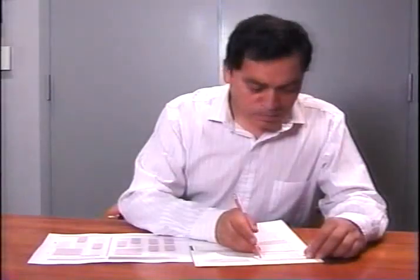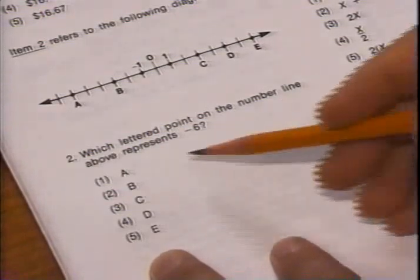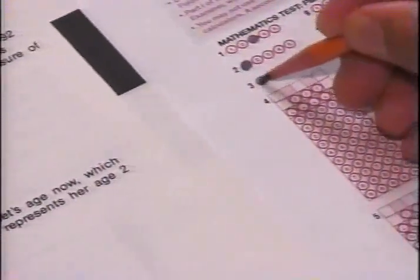As you take your GED mathematics test, most questions will require you to select your answer from one of five choices. Then you'll carefully fill in the corresponding circle in your answer booklet completely using a number two pencil.